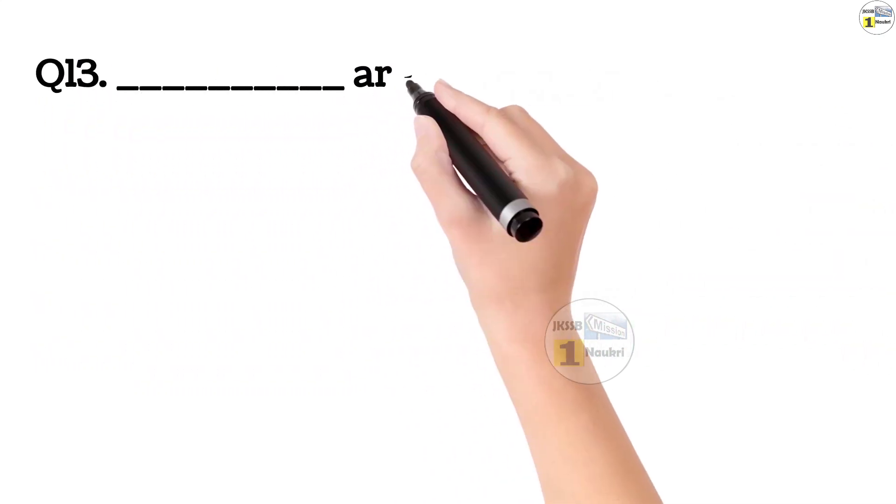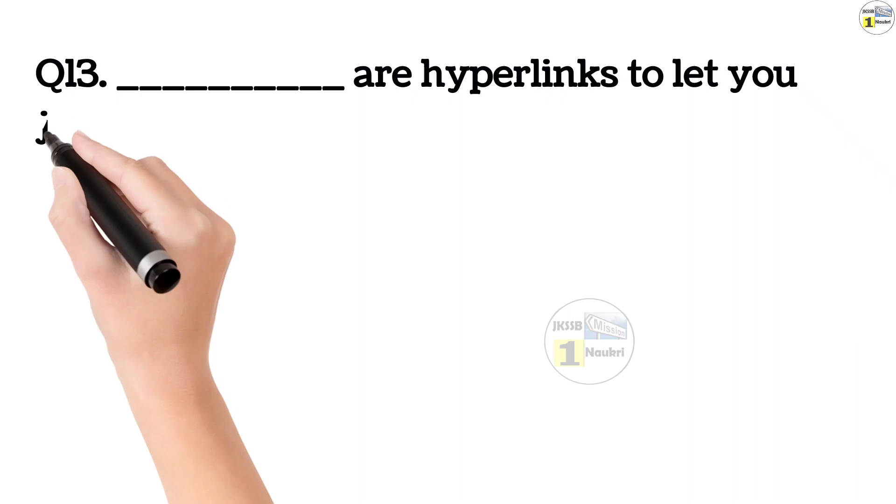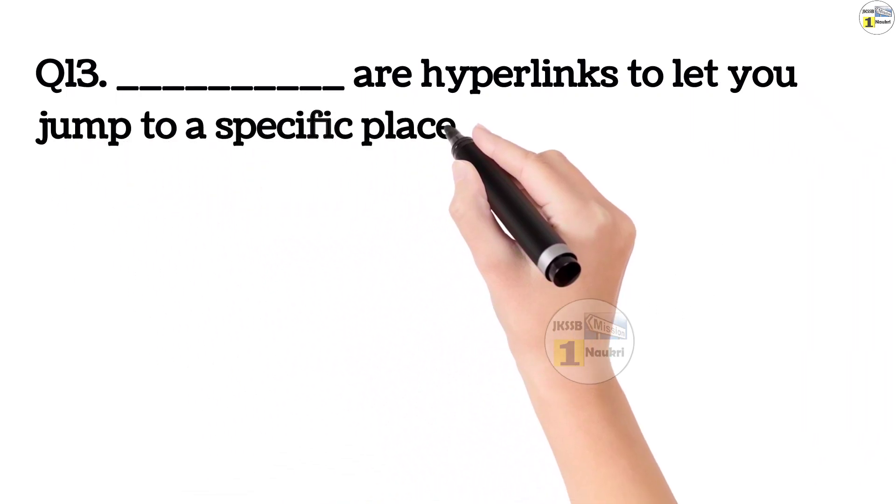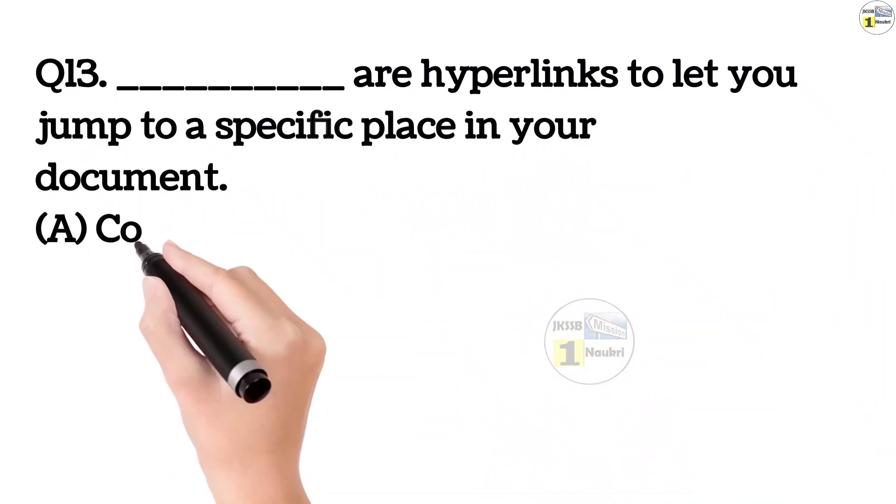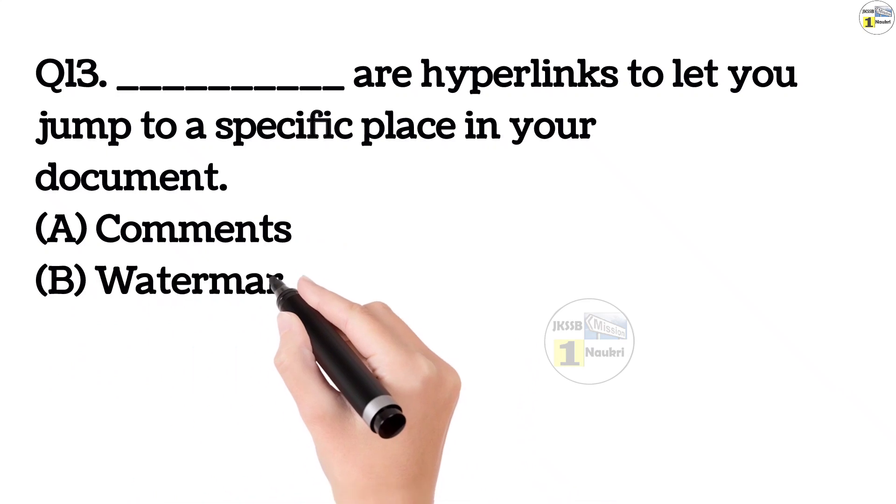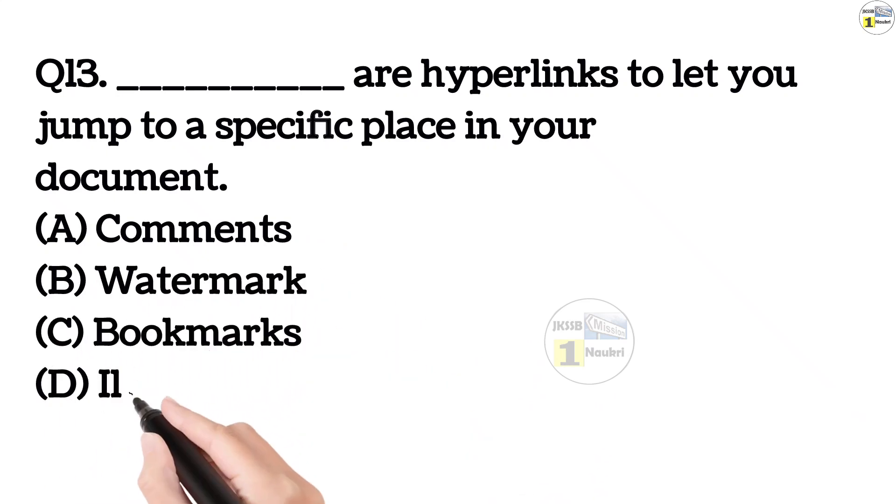Question number 13. Dash are hyperlinks to let you jump to a specific place in your document. Option A, comments. Option B, watermark. Option C, bookmarks. Option D, illustrations. This answer is correct, bookmarks.